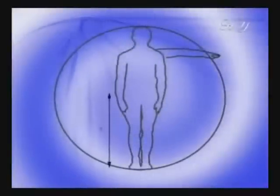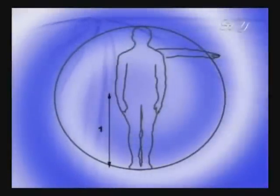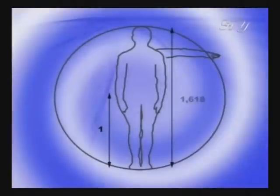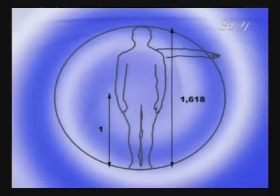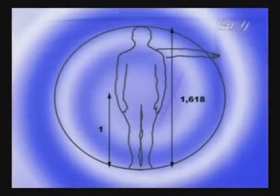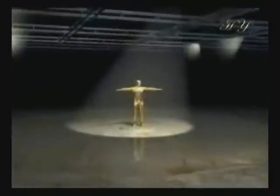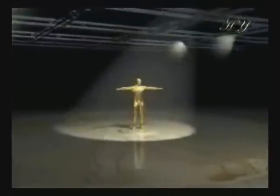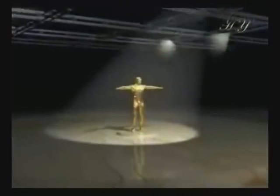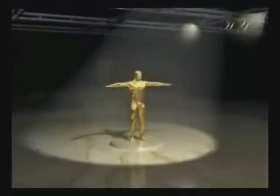The first example of the Golden Ratio in the average human body is that when the distance between the navel and the foot is taken as one unit, the height of a human being is equivalent to 1.618. Some other golden proportions in the average human body are as follows.